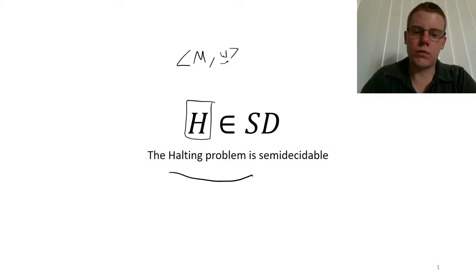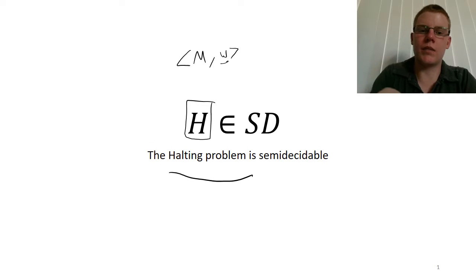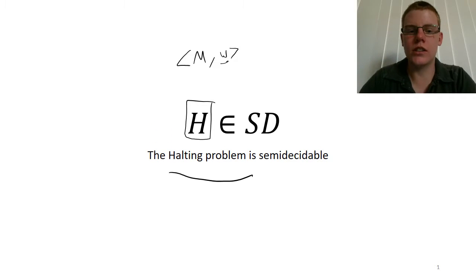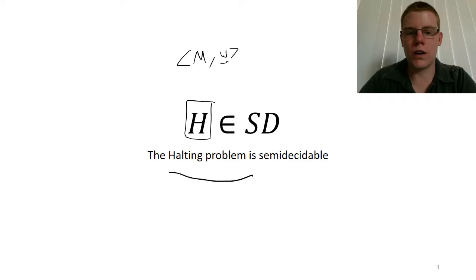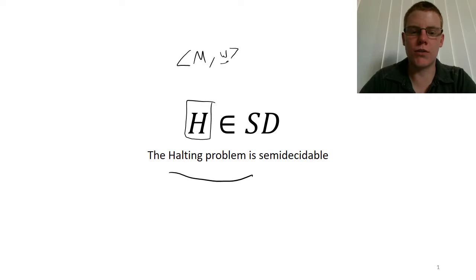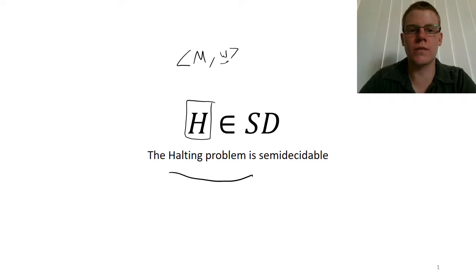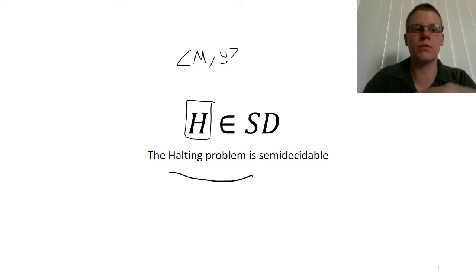Essentially, the halting problem — being able to say that a particular string is in H or not in H, and being able to say that all the time — means we are actually able to decide if a program will halt on a particular input or not. That would be an incredibly helpful thing to be able to decide for certain. In this video and the next, we're going to show that it's actually impossible to decide this problem.